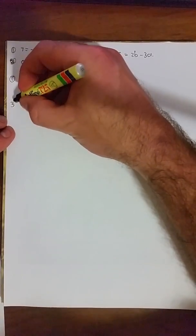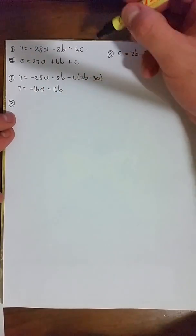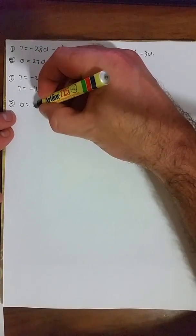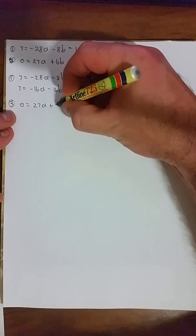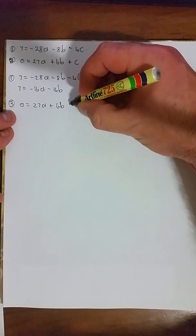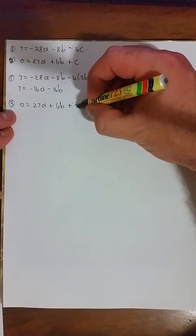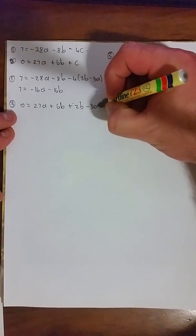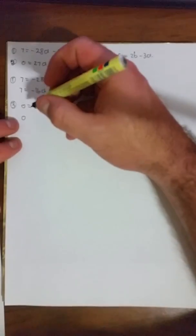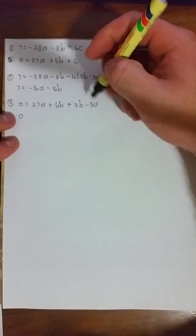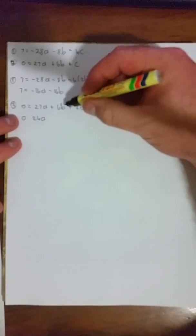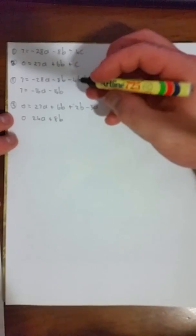Now let's see what happens when we substitute that c expression into equation 3. We get 0 = 27a + 6b + c, which is 2b - 3a. Just collecting like terms here. So 27a - 3a = 24a. 6b + 2b = 8b.